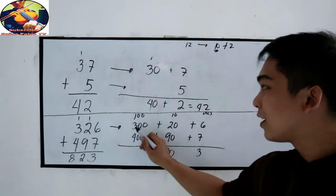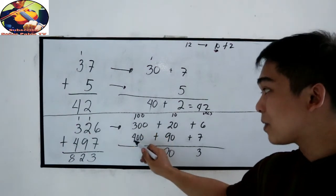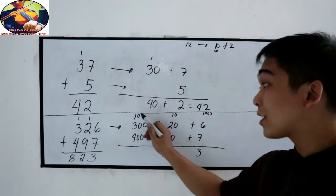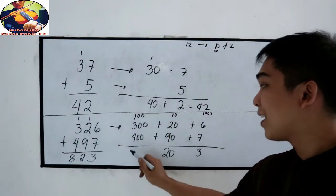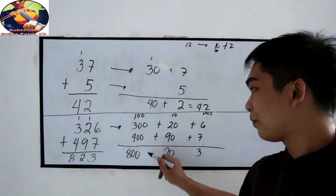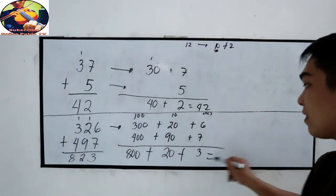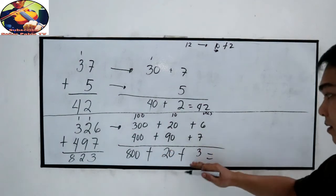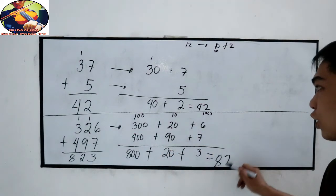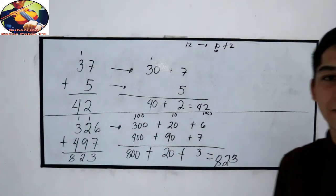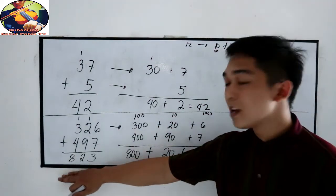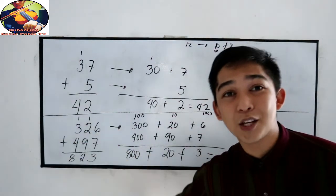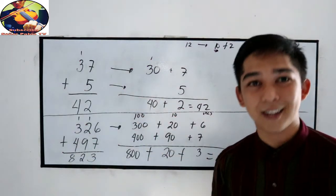Now we have 300 plus 400, that is 700, plus 100 carried, equals 800. If we add it all together, that is 800 plus 20 plus 3, which is 823. Which is the same answer. That is the origin and explanation of our regrouping.